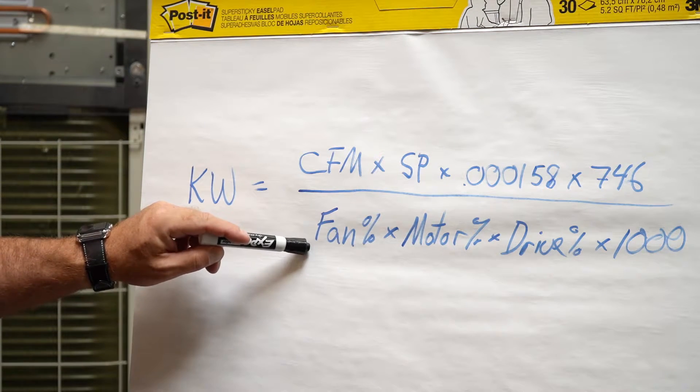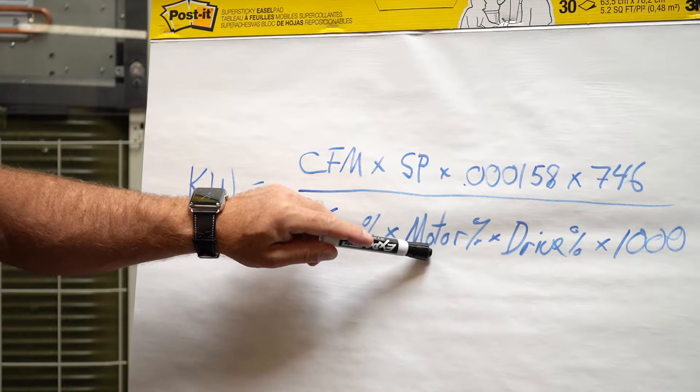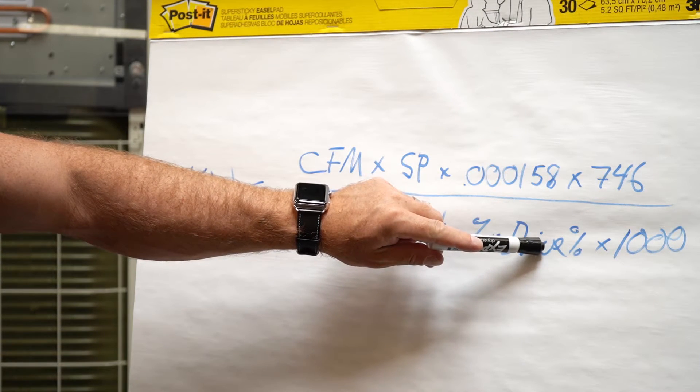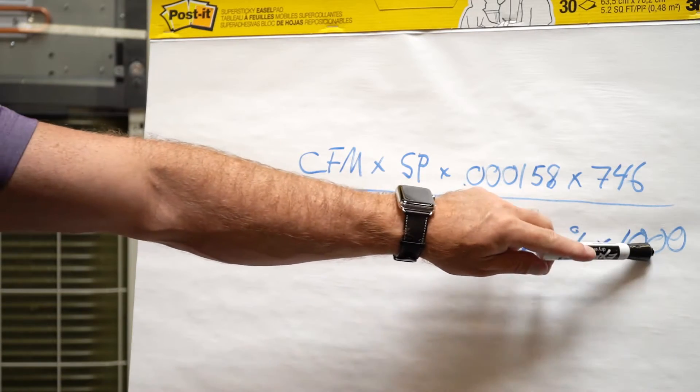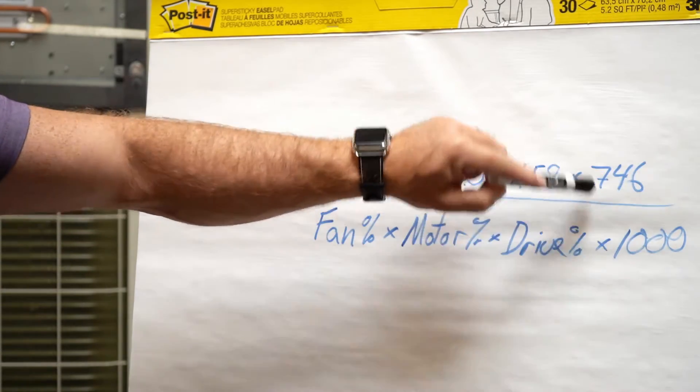In the denominator we have our fan efficiency multiplied by our motor efficiency multiplied by our drive efficiency, so if we're using a VFD we have losses there, or a belt system, times 1,000, which is the other component of this KW conversion.